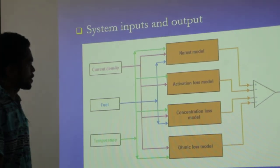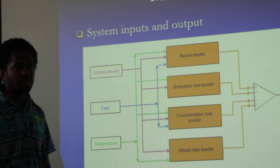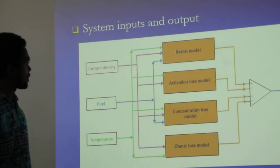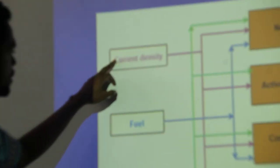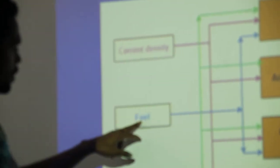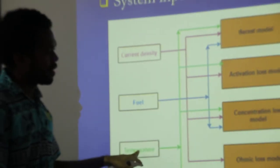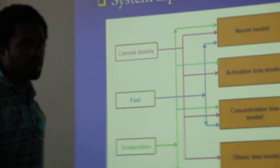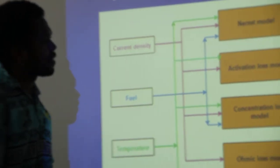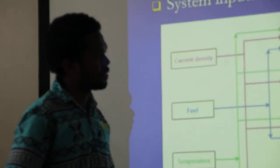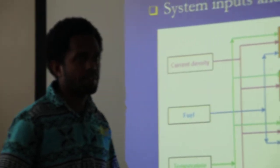The system has three input variables: current density, fuel, and temperature. And the system has one output, which is the voltage.